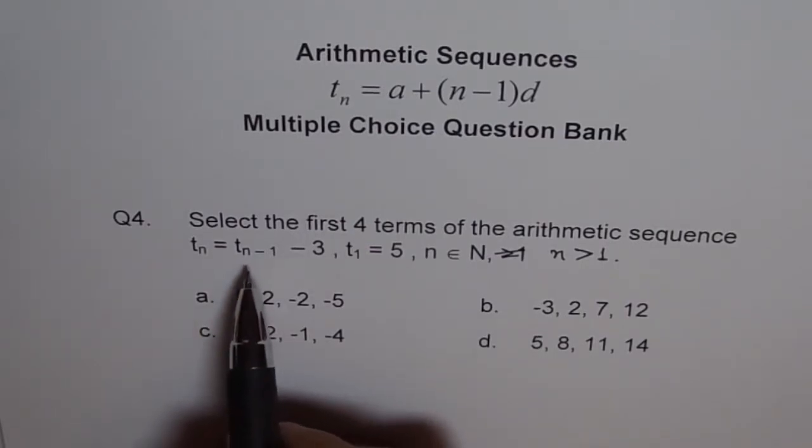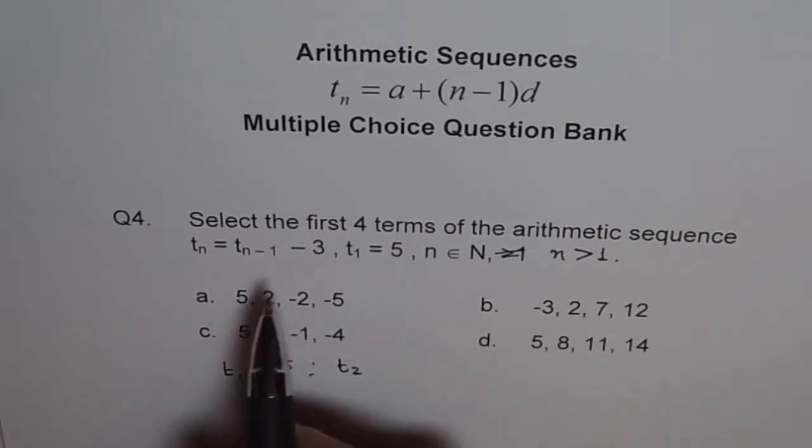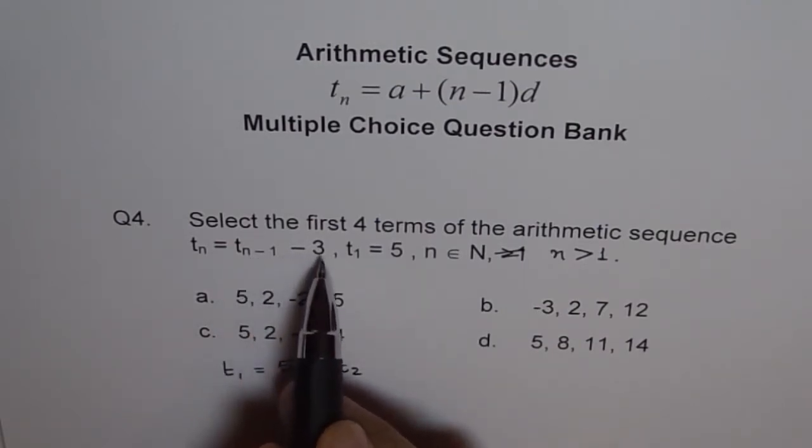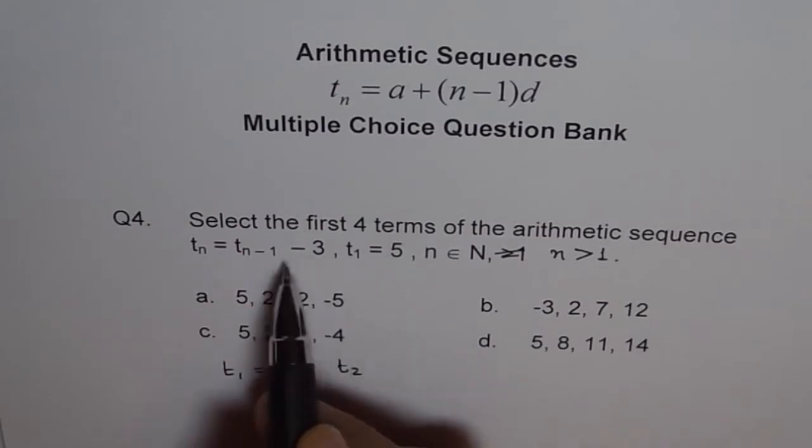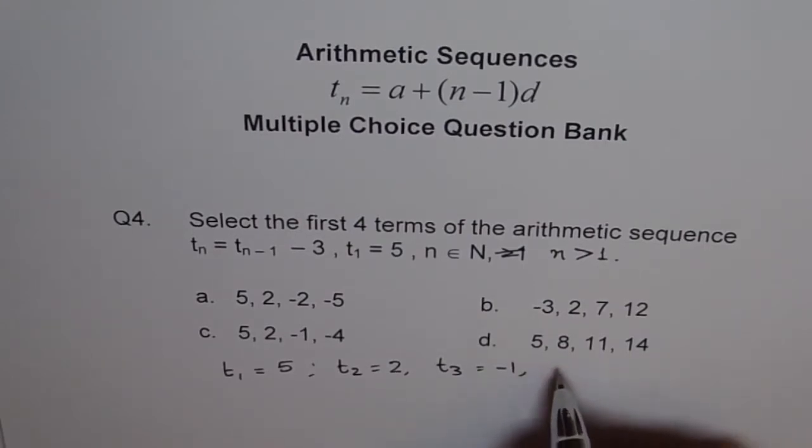So we will use previous term. So T1 we know is what? T1 is equal to 5. Correct? Now, T2 is previous term minus 3. Previous term is 5. Right? 5 minus 3 is 2. And T3 will be previous term, which is 2. 2 minus 3 will be minus 1. And T4 will be previous term, which is minus 1. Minus 1 minus 3 is minus 4.